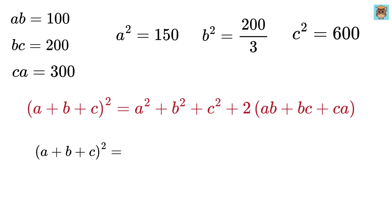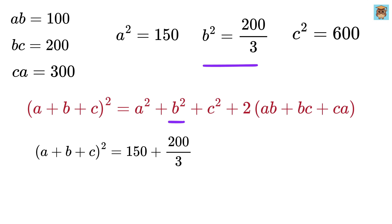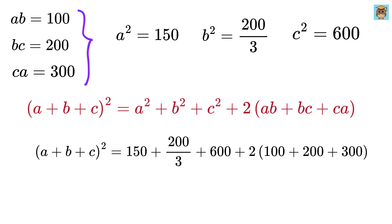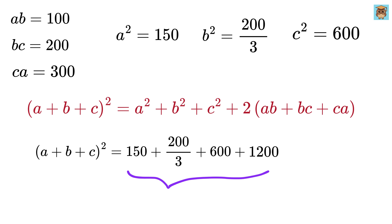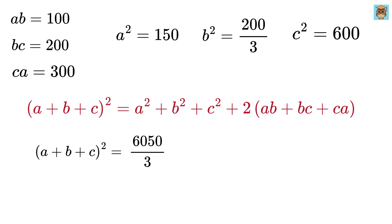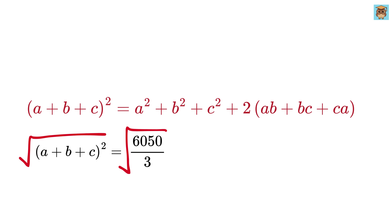Plugging these into the identity, we get a plus b plus c whole square equals 150 plus 200 over 3 plus 600 plus 2 times 100 plus 200 plus 300. Now 100 plus 200 plus 300 is 600, so two times that is 1200. Adding up all the terms, we have a plus b plus c whole square equals 6050 over 3.